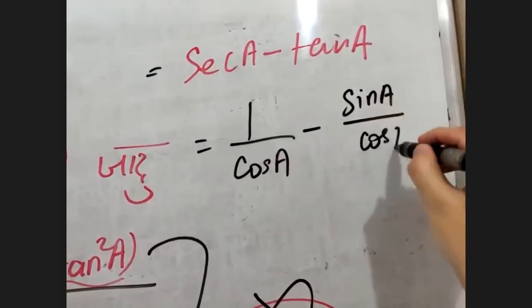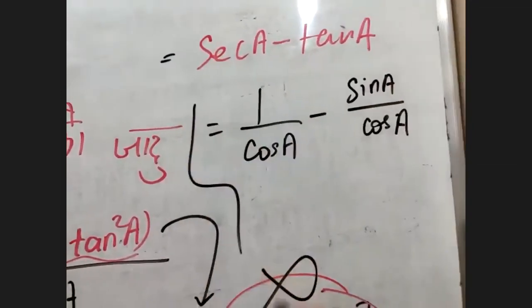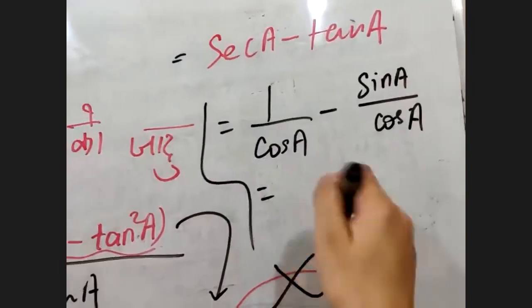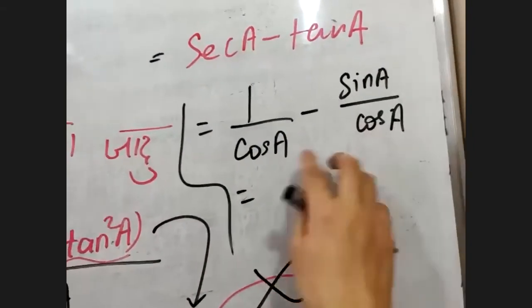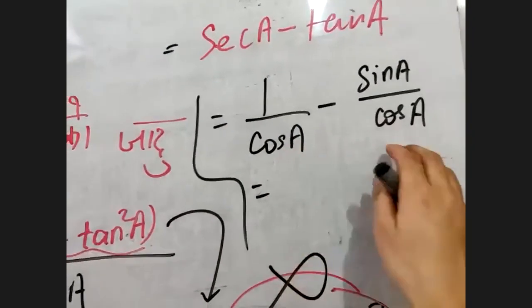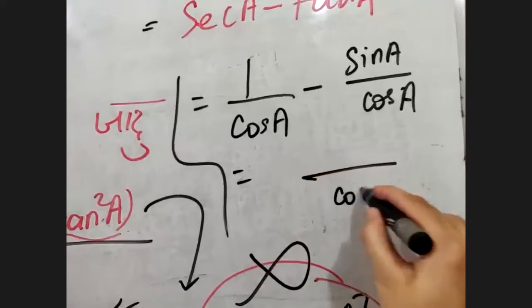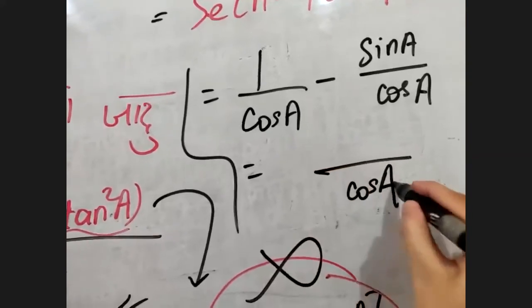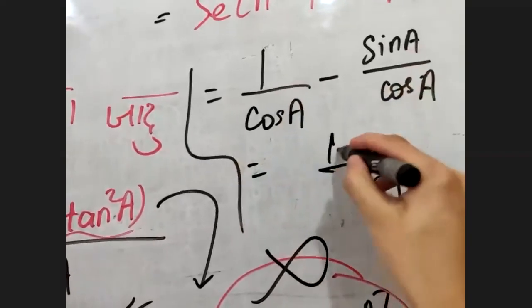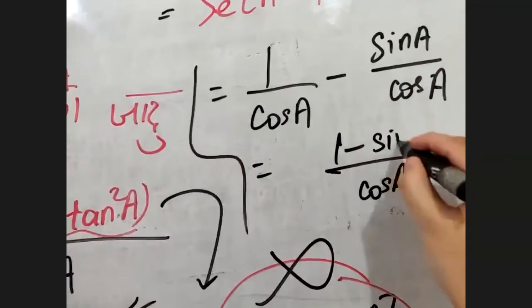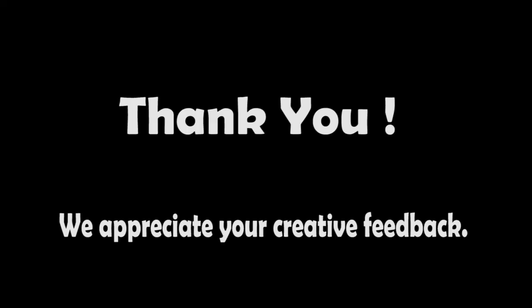Now write secA as one by cosA and tanA as sinA by cosA. Since both terms have cosA in the denominator, write a single cosA in the denominator, giving (1 − sinA)/cosA, which is our right-hand side.